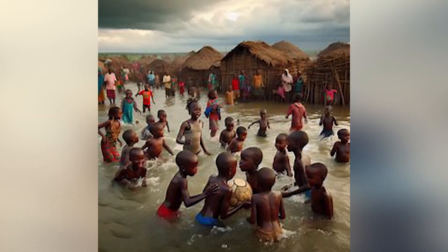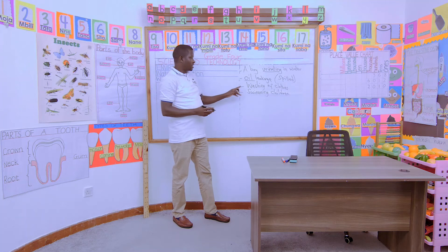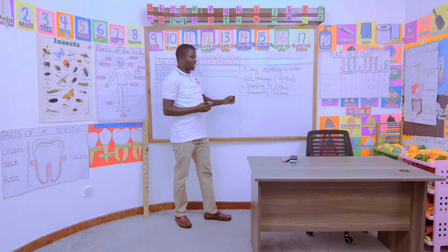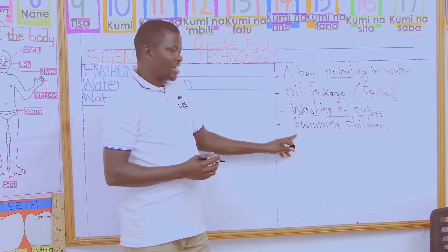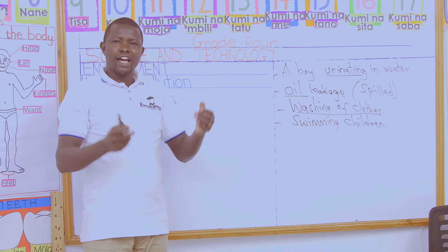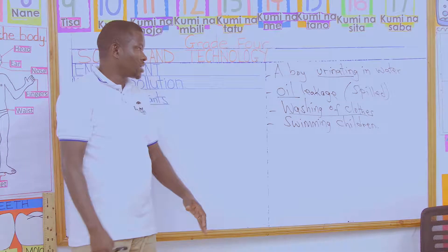The children are swimming in the river. So these things are happening: from the first one it is urination — a boy urinating, the urine is being introduced into the water. Number two, we have seen oil spillage or oil leakage, also introduced into the water. From picture three, women washing clothes — there is dirt from the clothes being washed. And the last one is children swimming — as they swim and wash themselves, their dirt from their bodies is also entering the water.